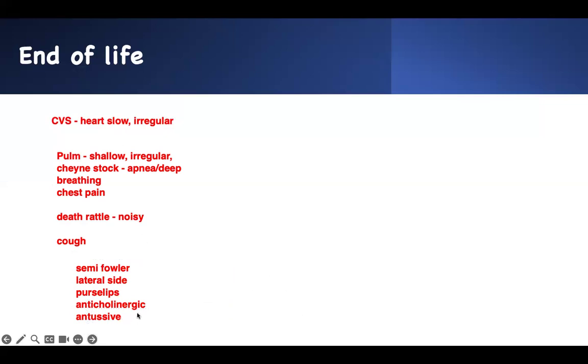Those are the things you have to pay attention to in terms of end of life care. GI—they will have constipation or diarrhea, so they will need a bowel regimen to help with the condition. You need some stool softener.